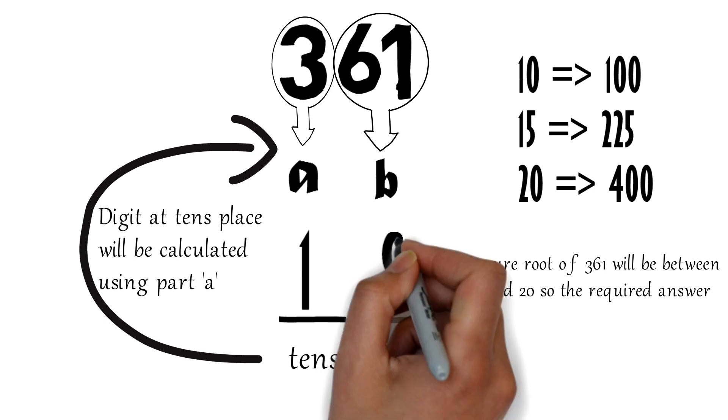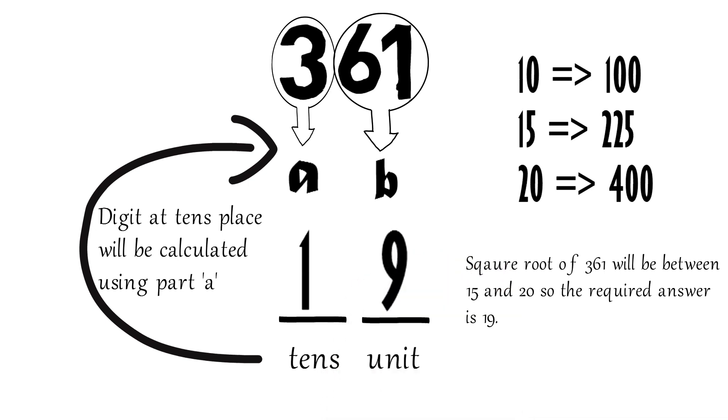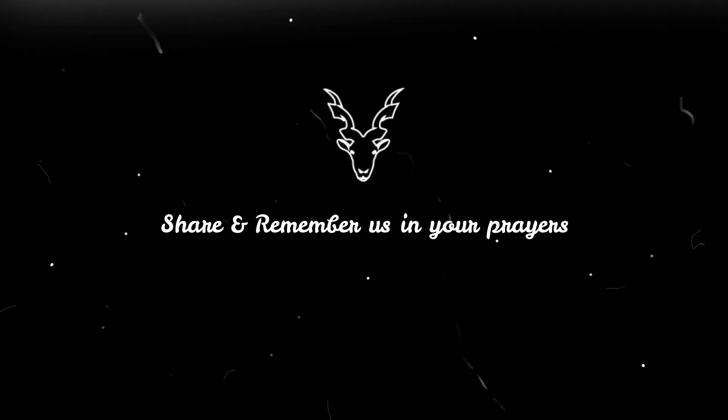The required answer is 19. In this way, we can calculate the square root of a three-digit number without using a calculator. Thank you for watching this video and stay tuned for our next video.